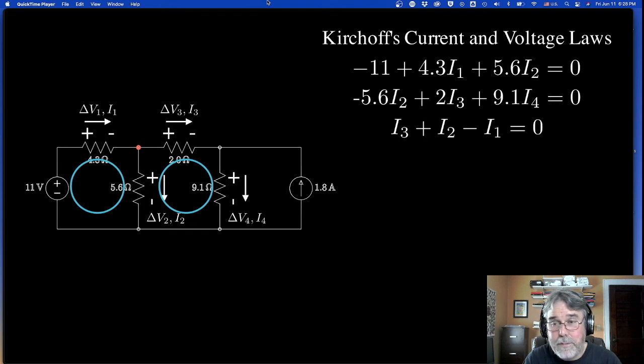Now that gives us one more equation. But I still need another equation because I've got four unknowns, I only have three equations. So I've got to look at this other node on the other side. What currents are leaving that junction? Well, I4 is leaving the junction. But I've got I3 and I've got the 1.8 amps from that current source entering. So this one is going to be I4 minus 1.8 minus I3 equals zero. So now I've got four equations and four unknowns, and I can solve the circuit.